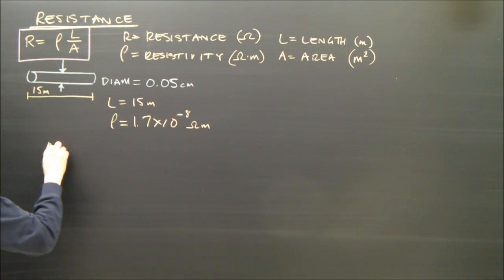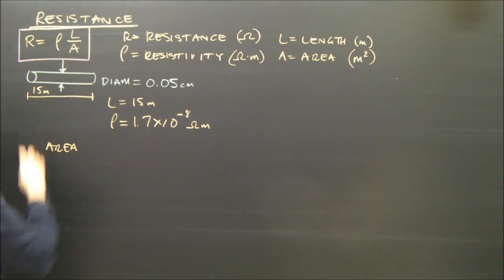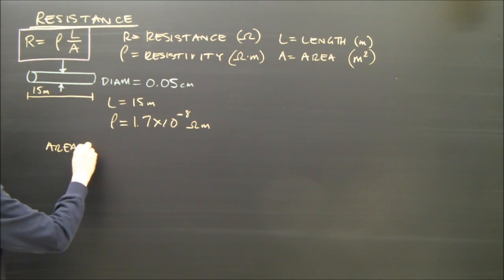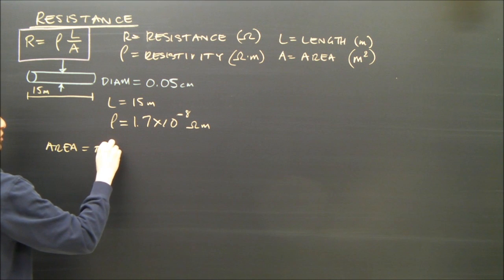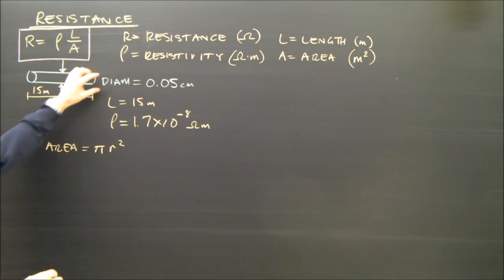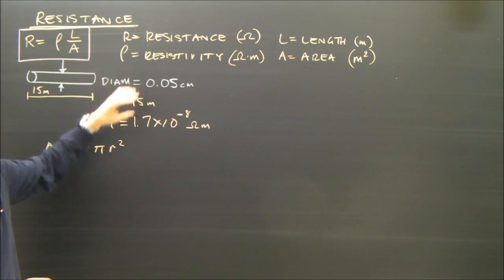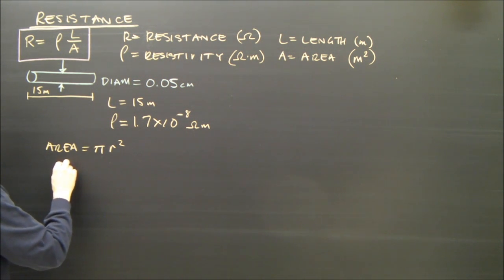So I'm going to have to calculate the area before I can plug it into the formula. And you know the area is equal to pi r squared. But I don't have the radius. I've got the diameter. So I have to find the radius.